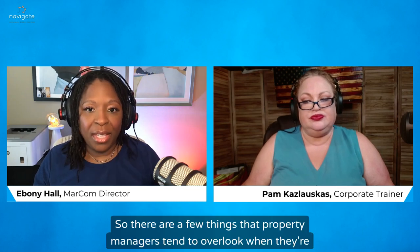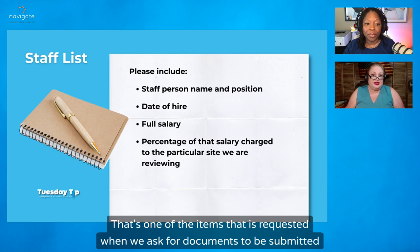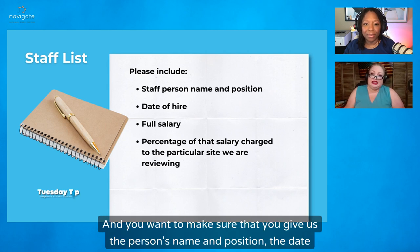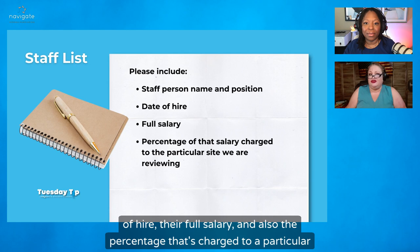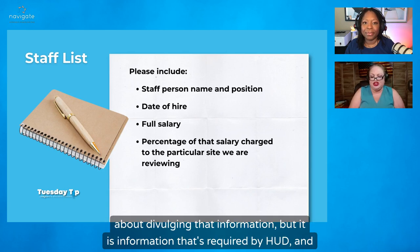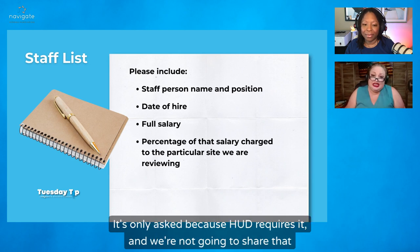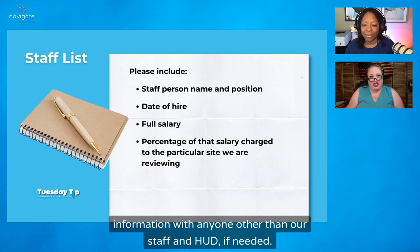There are a few things that property managers tend to overlook when they're preparing for their MOR. One of the things that is very frequently overlooked is a staff list. That's one of the items requested when we ask for documents to be submitted in the portal. You want to make sure that you give us the person's name and position, the date of hire, their full salary, and also the percentage of time charged to a particular site. We know that some property managers have expressed being uncomfortable about divulging that information, but it is required by HUD, and if we don't get that, unfortunately we could have to issue a finding. It's only asked because HUD requires it, and we're not going to share that information with anyone other than our staff and HUD.